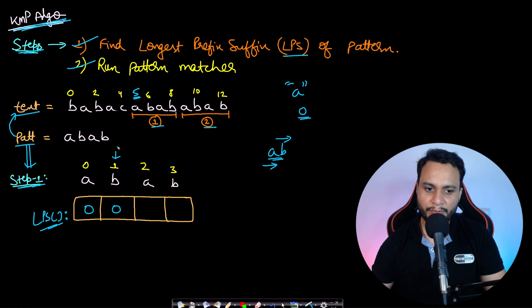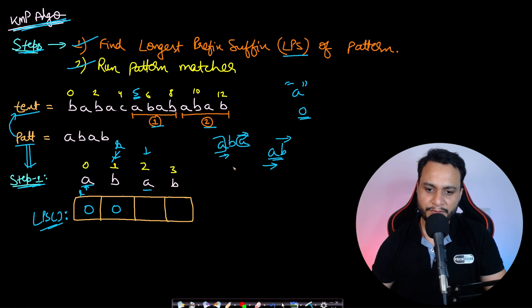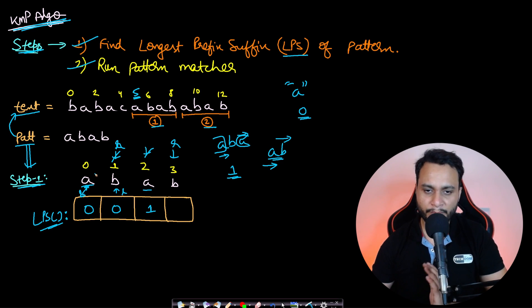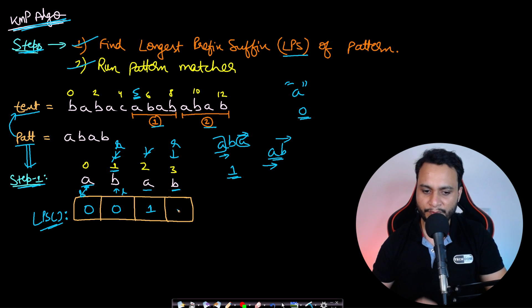I place a right pointer and a left pointer. If the right pointer does not match the left pointer, move right. If they match — for example 'a' matches 'a' in 'aba' — the longest prefix which is also a suffix has length one. The LPS value is the index of the left pointer plus one. When a match happens, move both pointers right. For 'abab', the length is two, so the LPS array is successfully formed.